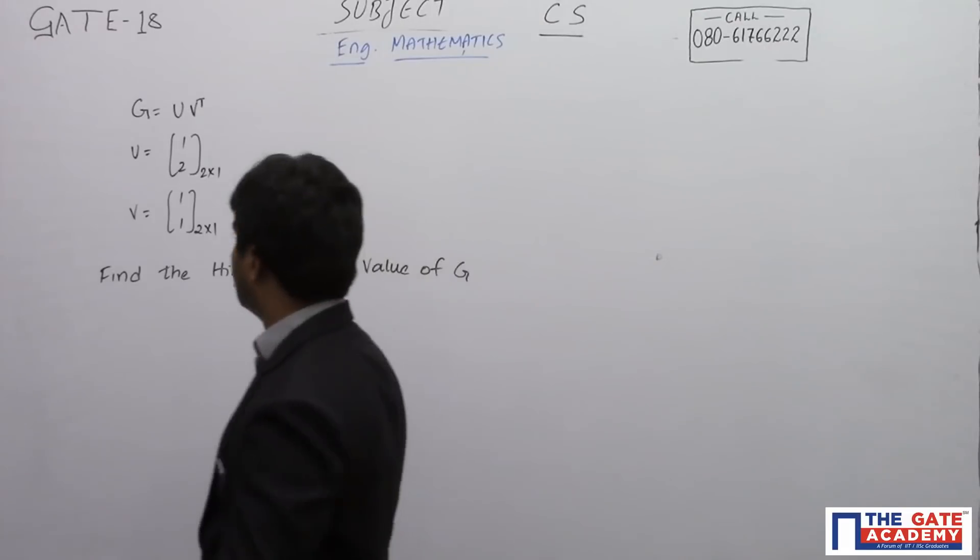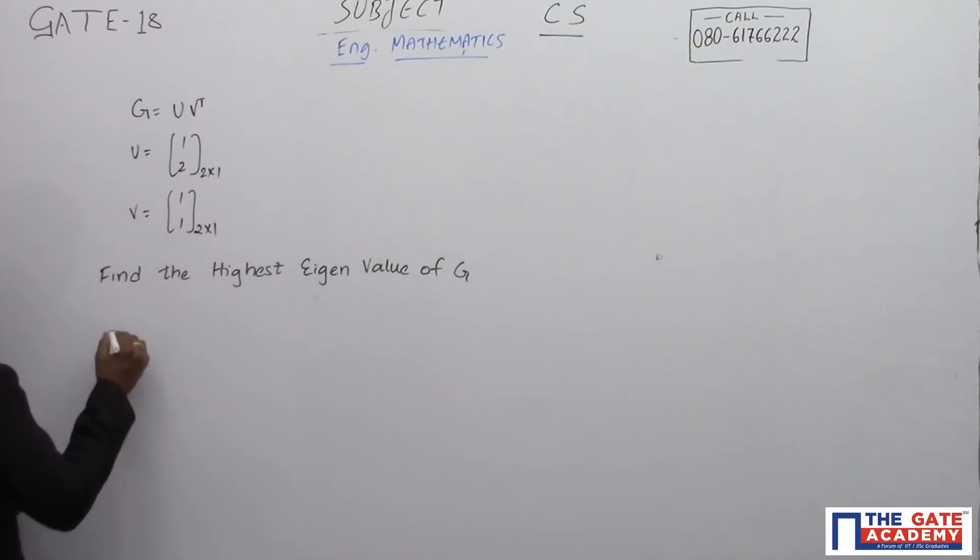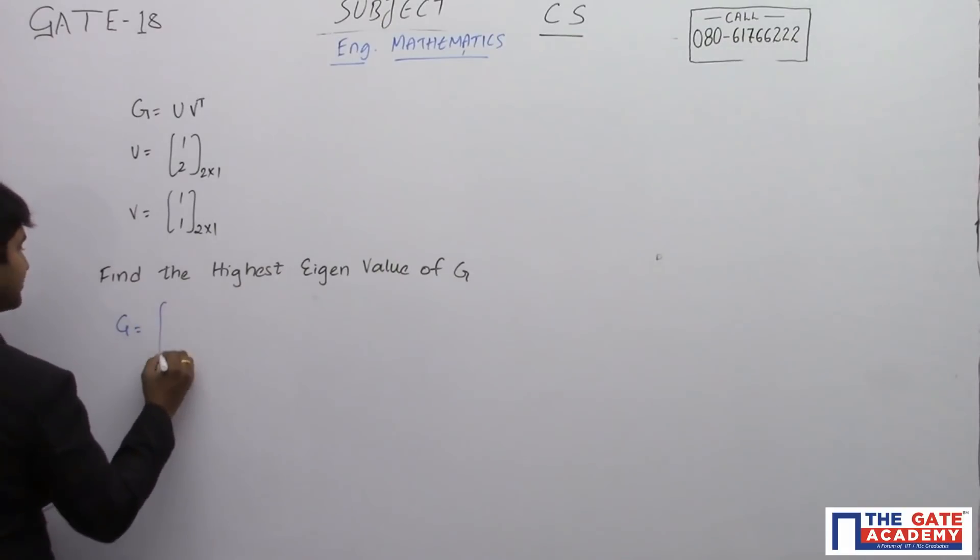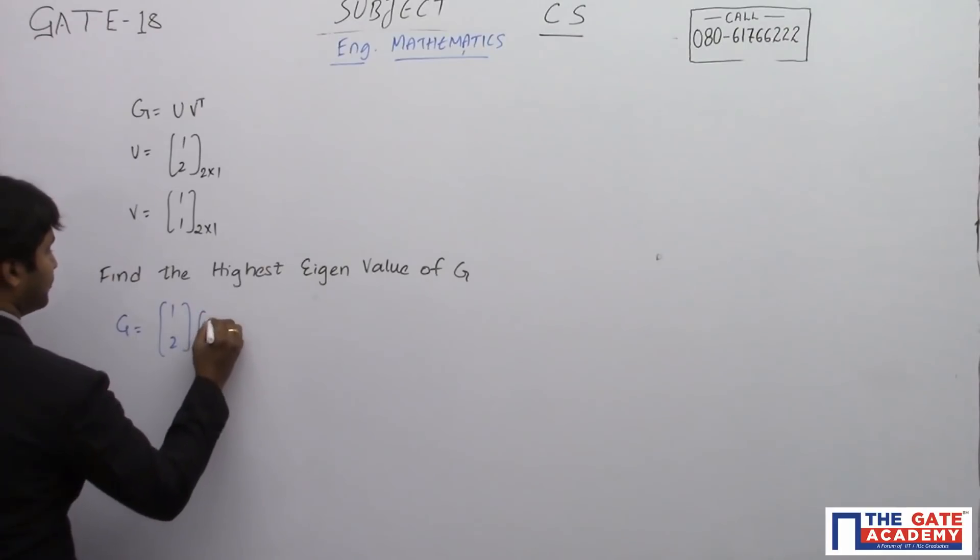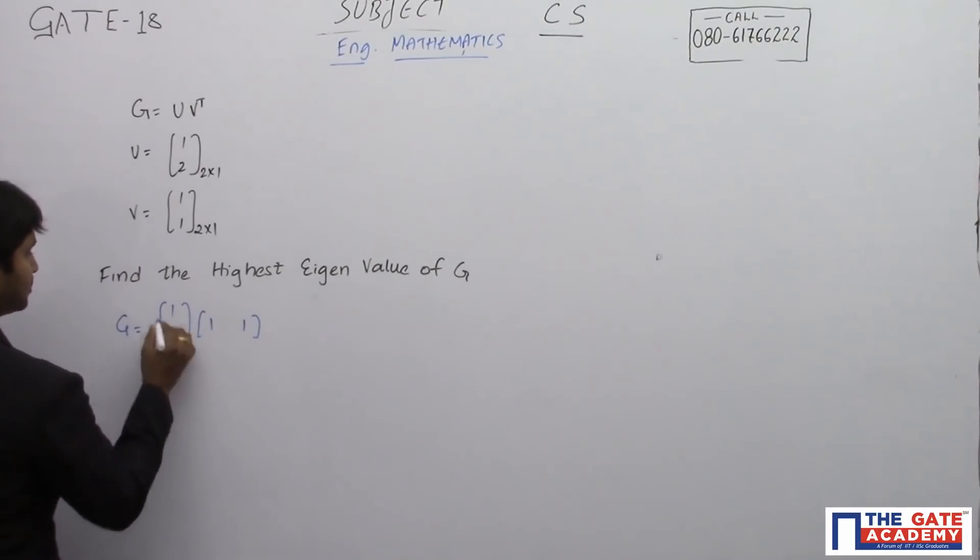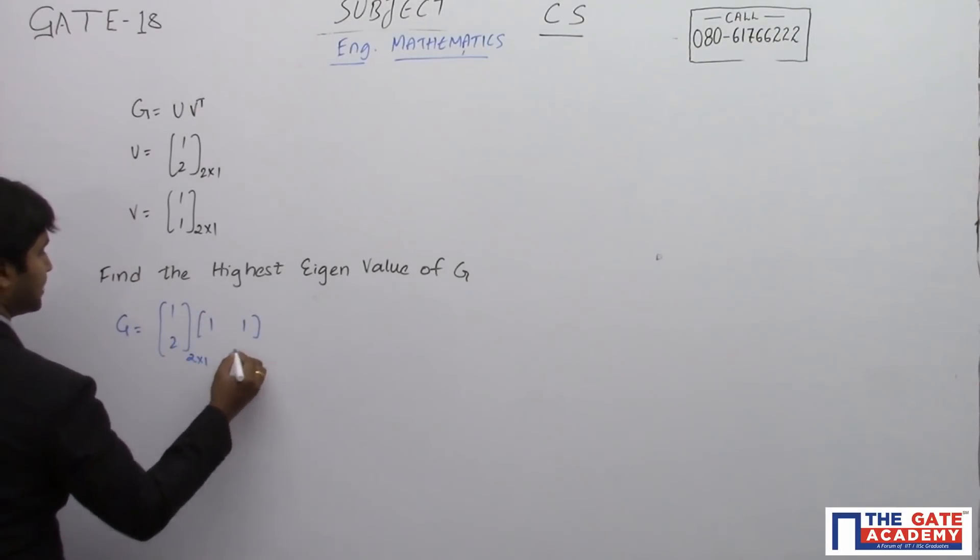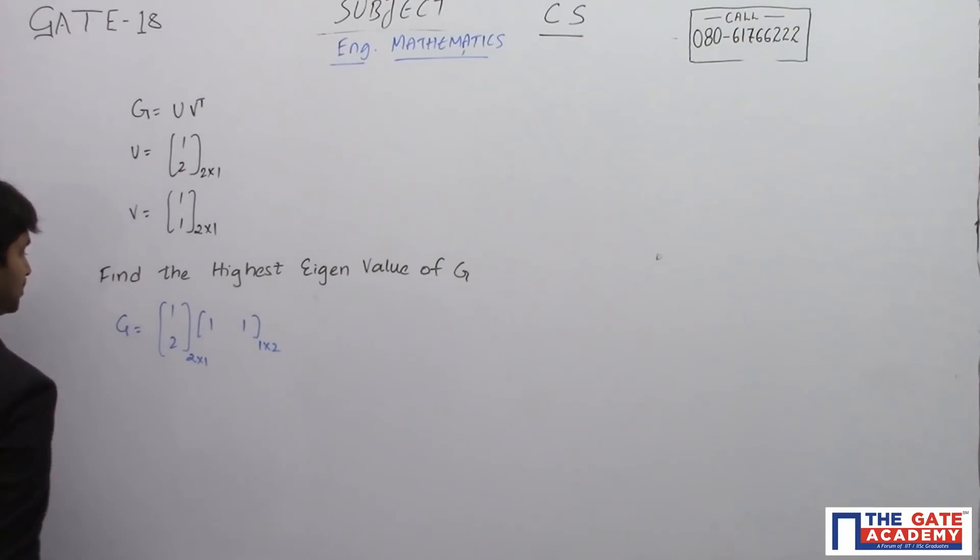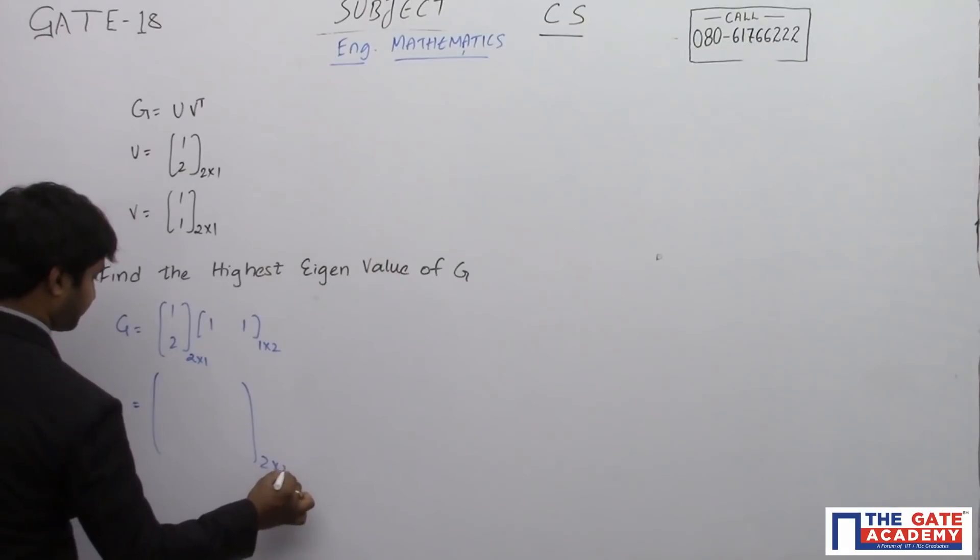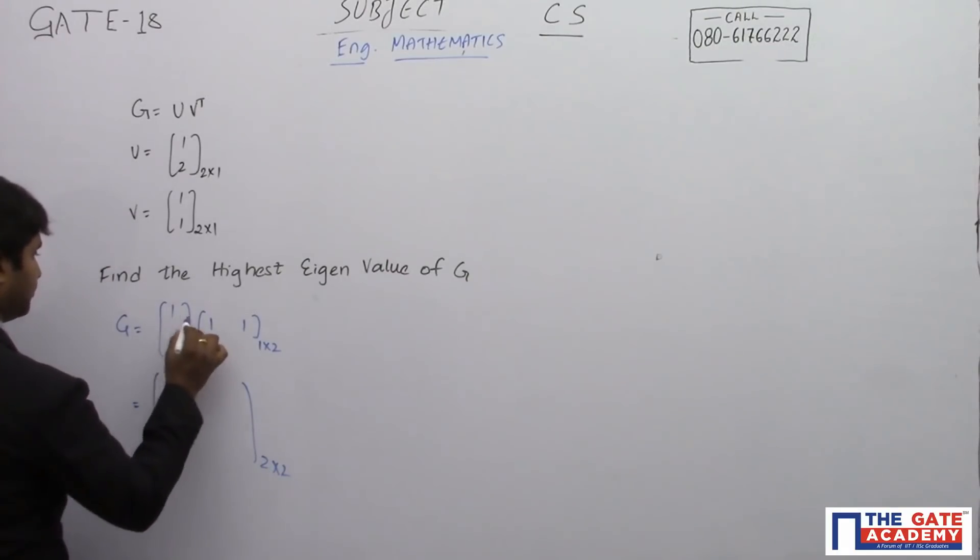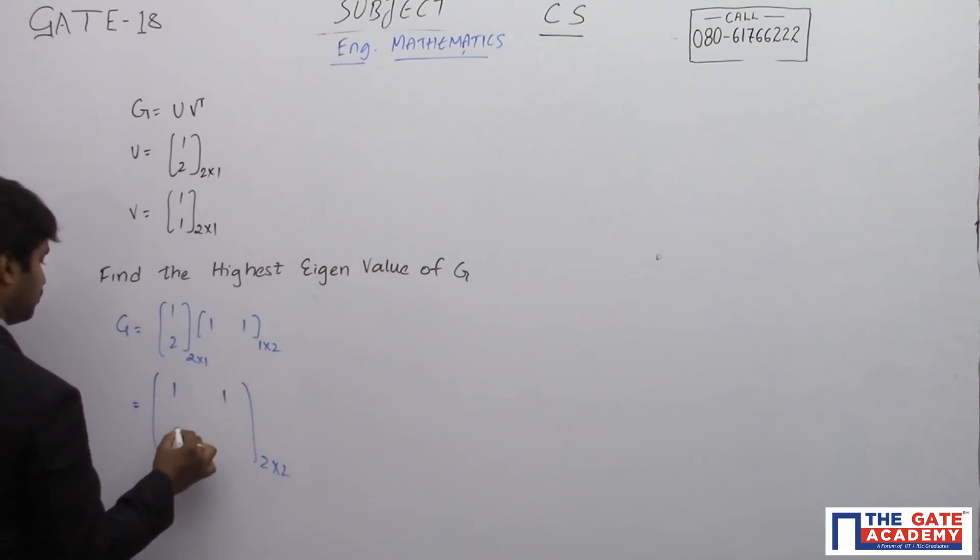So we have to find the highest eigenvalue of G. First of all, let us try to write G in terms of u v transpose. So G is equal to u which is given by [1, 2] and v transpose is [1, 1]. So here you are having a 2 by 1 matrix and here you have a 1 by 2 matrix, so the resultant matrix is going to be a 2 by 2 matrix: [1, 1; 2, 2].